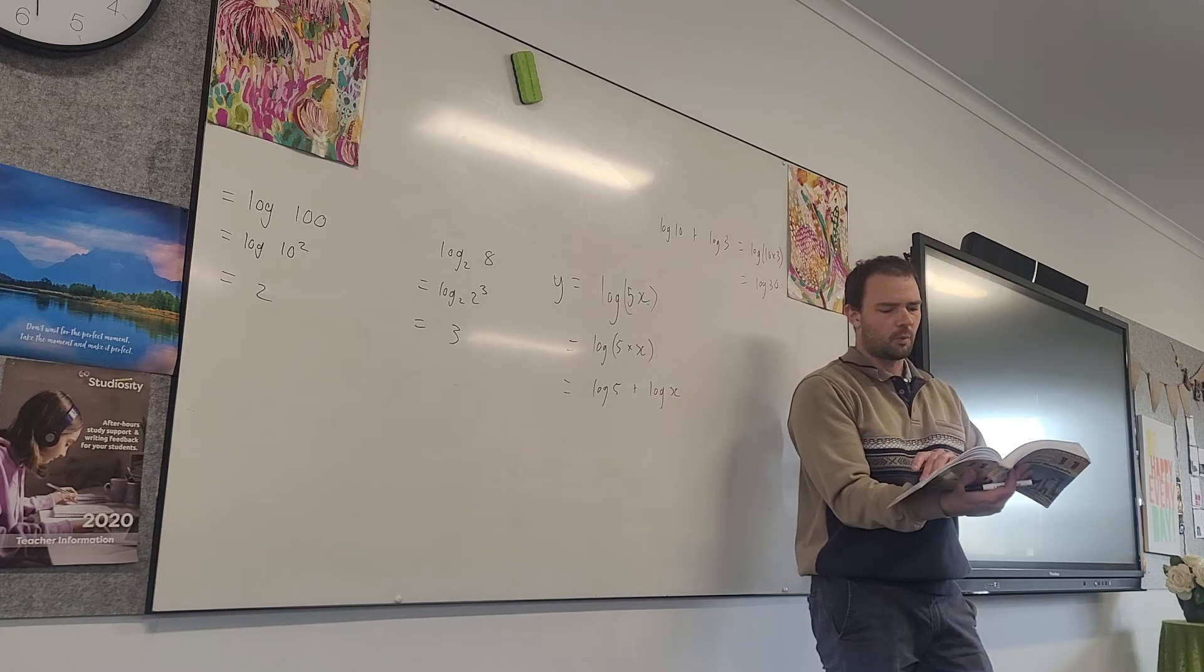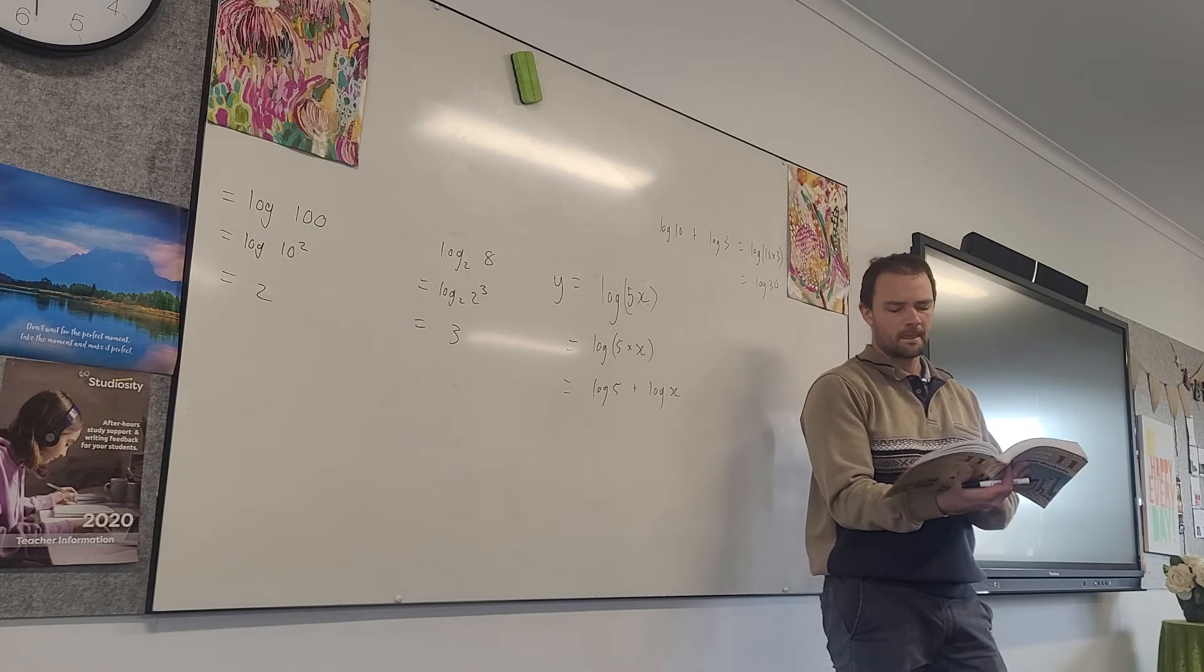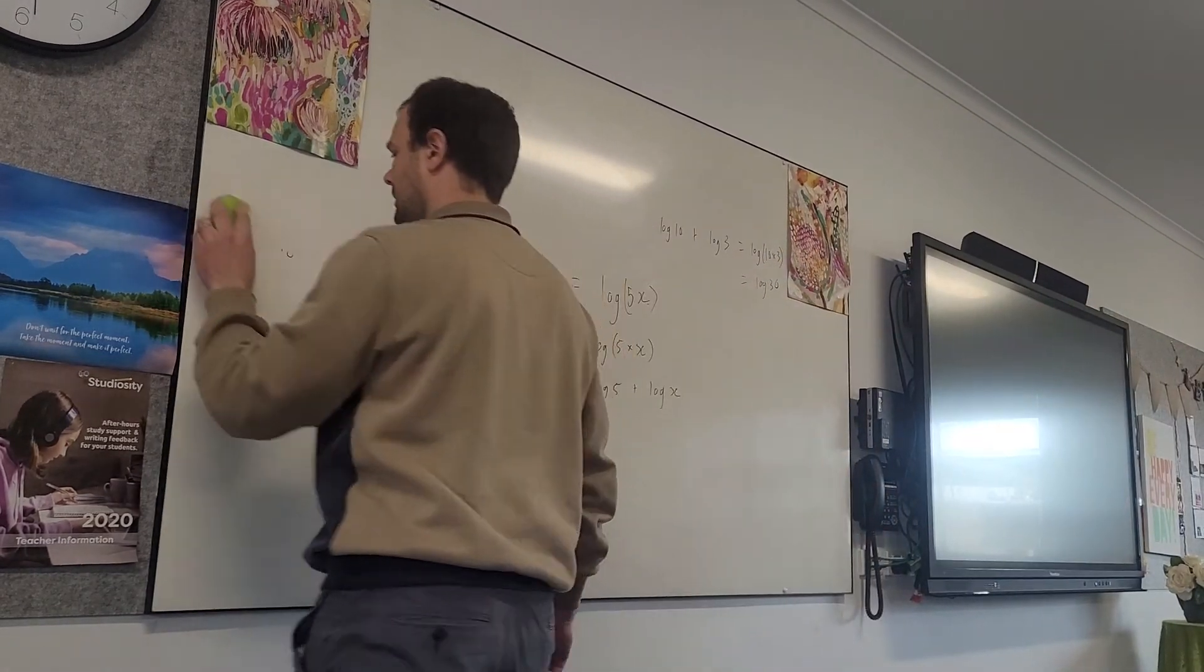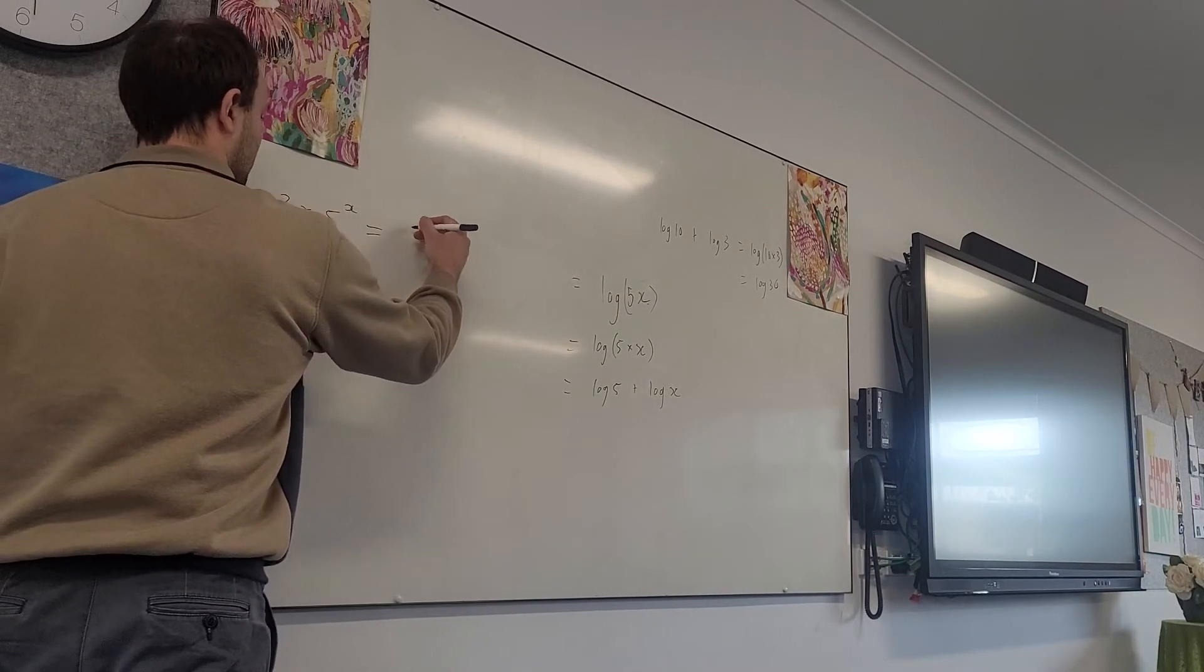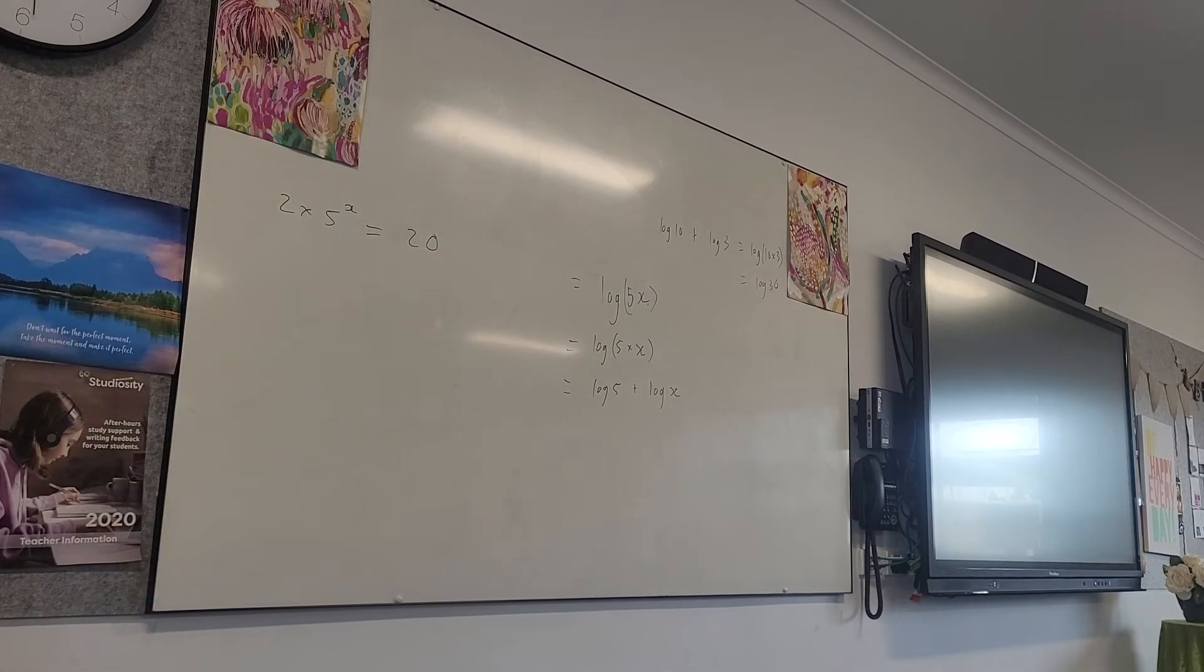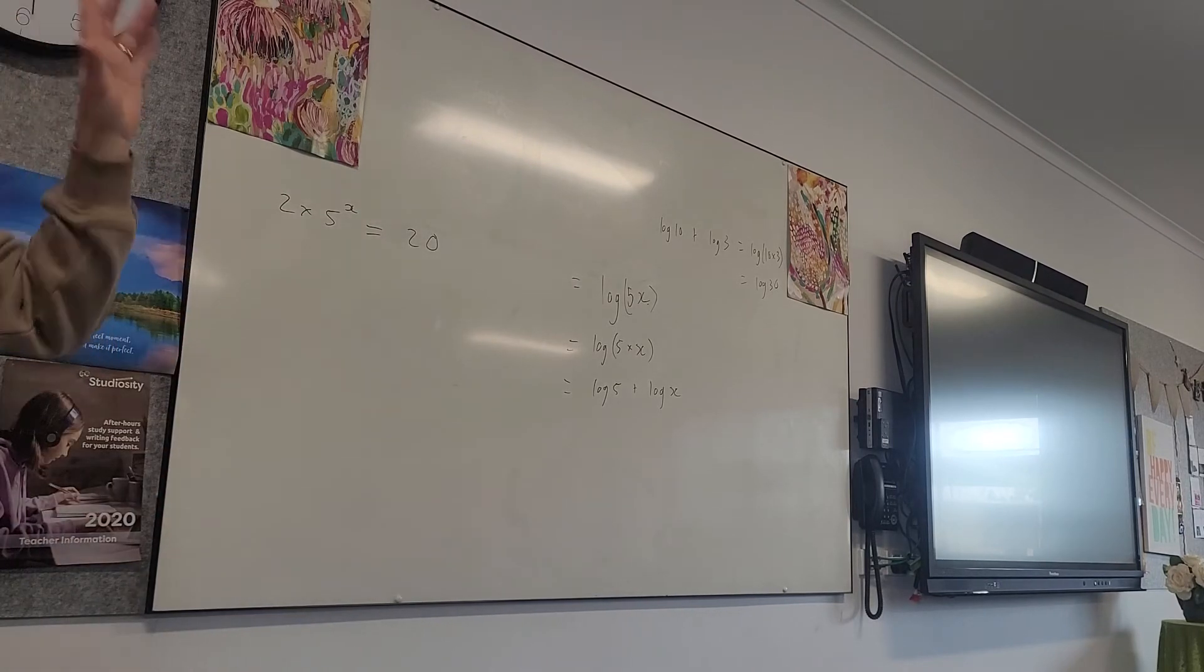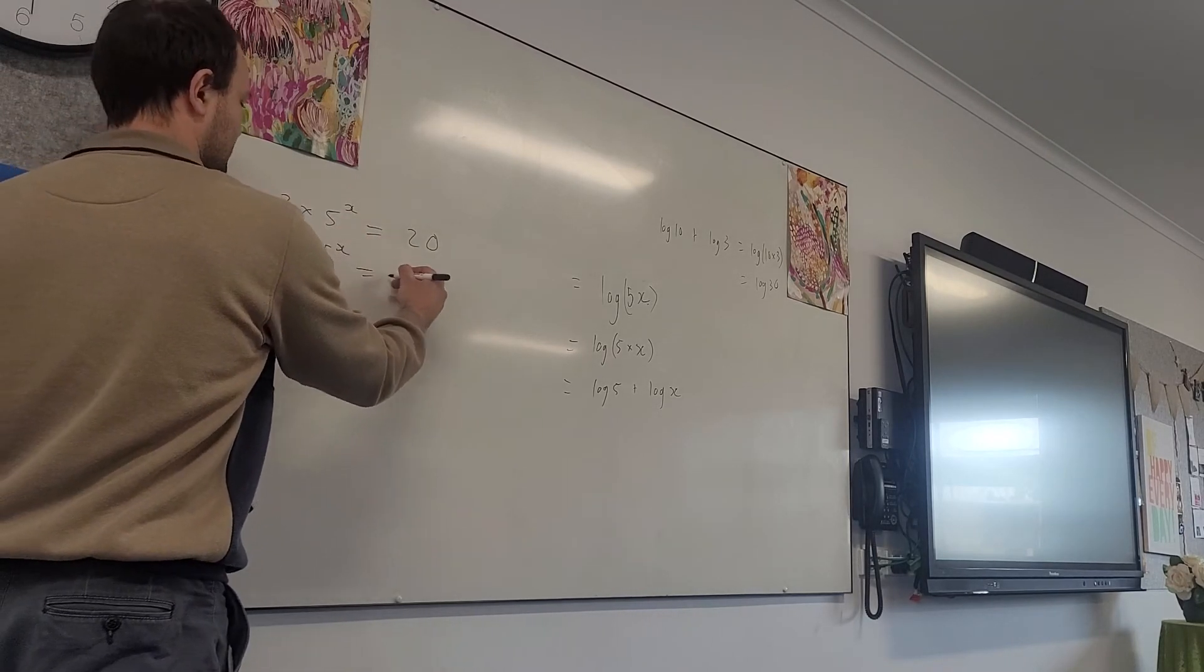13c, we get on to solving equations with logarithms. And in growth and decay, we're using those same skills as well. So let's just talk quickly about how we can solve an equation using logarithms. Let's say we've got 2 times 5 to the power of x equals 20. So we need to isolate this term by itself. We want to get x by itself. So that means we need to get rid of everything around x. So first we're going to divide both sides by 2. So we'll have 5 to the x is 10.